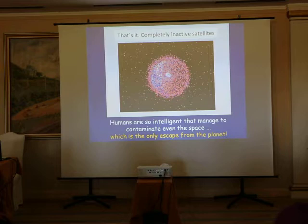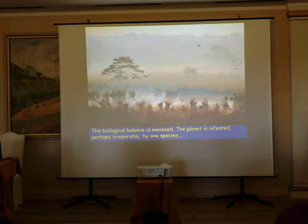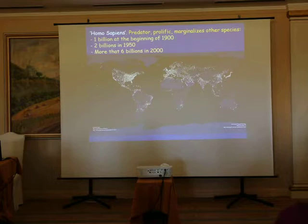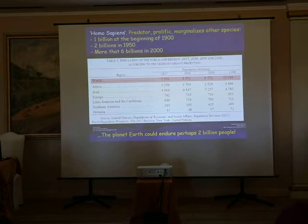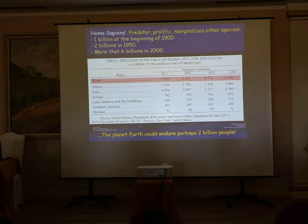The biological balance is threatened. The planet is infested, perhaps irreparably, by one species: Homo sapiens — predator, prolific, marginalizing other species. One billion at the beginning of 1900, two billion in 1950, more than six billion in 2000. We are now 7.5 billion in the world, and in 2100 we will have more than 11 billion inhabitants, most coming from Africa and Asia.